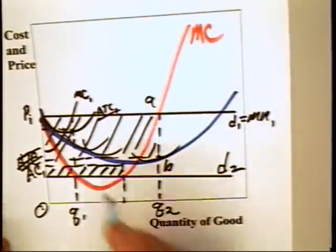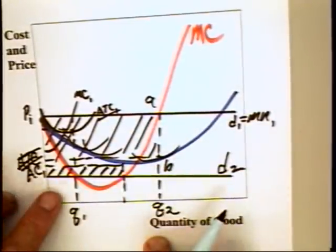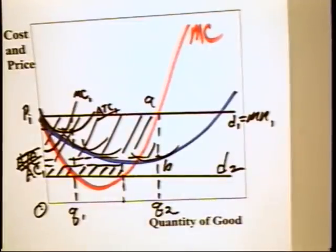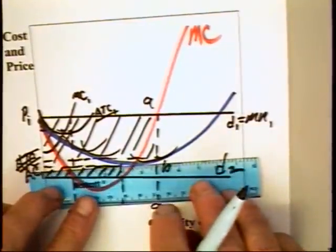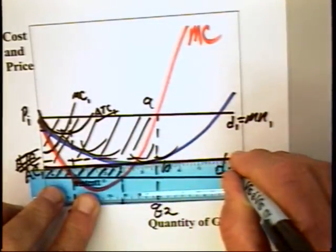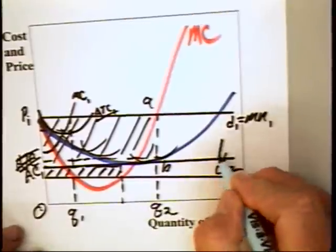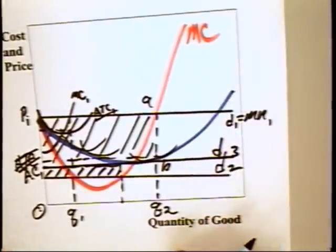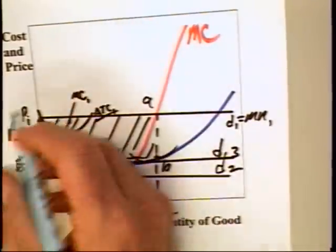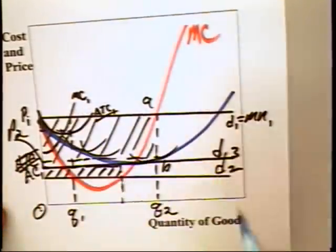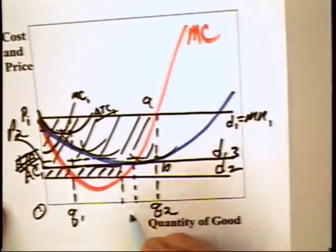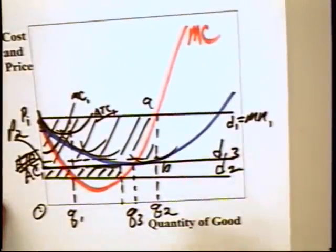Because one can imagine that with freedom of entry, the actual curve is going to move to where the equilibrium price in the long run is going to move the demand curve to something like P2. In which case, the firm would be producing right there at quantity Q3.